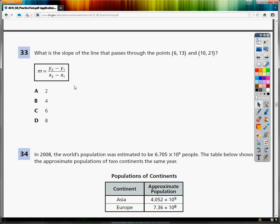Question number 33 on the 8th grade practice test for math. What is the slope of the line that passes through (6,13) and (10,21)?